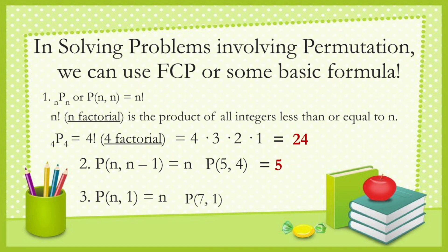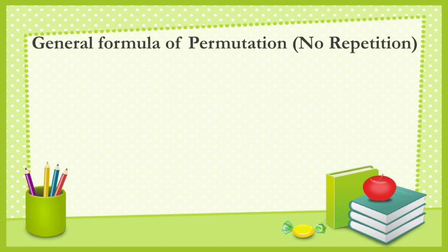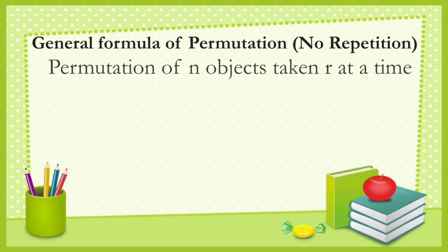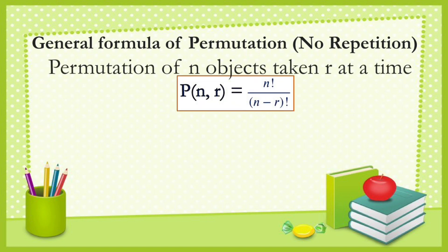The general formula for permutation of n objects taken r at a time — the arrangement of objects with no repetition — is P(n, r) equals n factorial over the quantity of (n minus r) factorial. For example, let's compute P(8, 3).